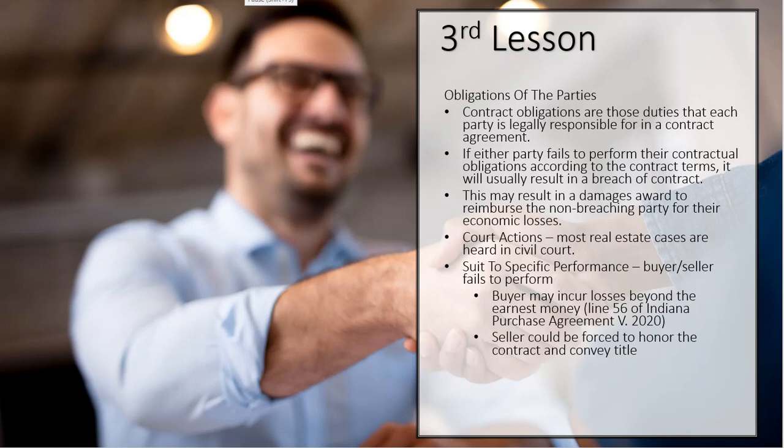In a contract that we have been talking about, we have mentioned the word mutual ascension — both parties must agree. It is for a legal objective, so that creates an obligation for both of the parties, and that obligation is defined inside the contract. An obligation is the duty or the act that each party becomes legally responsible for within a contract.